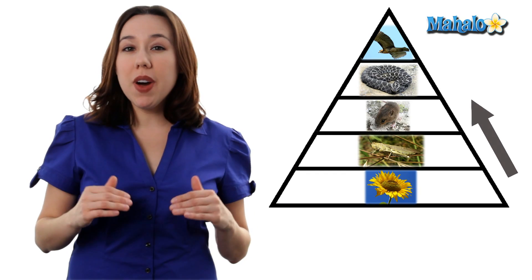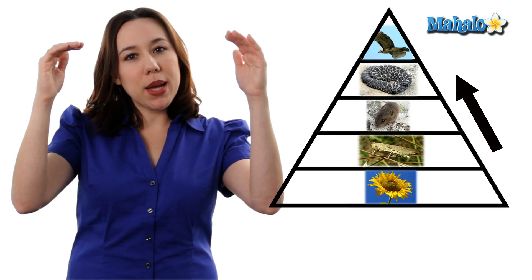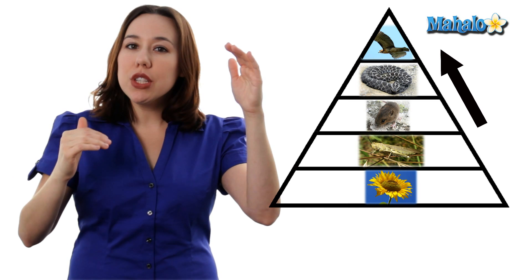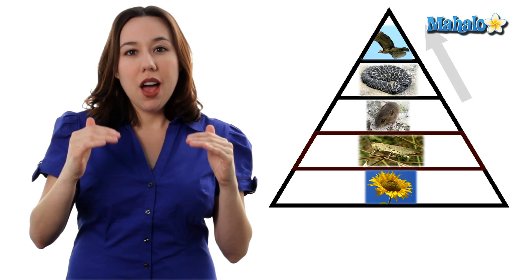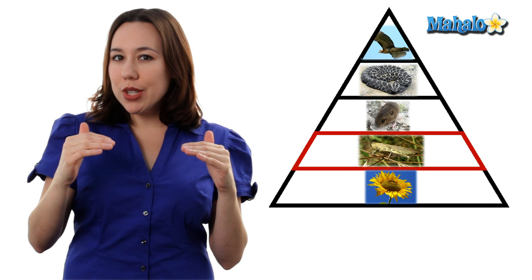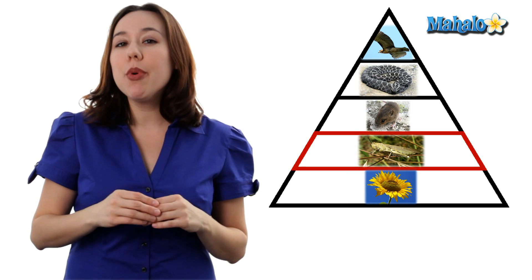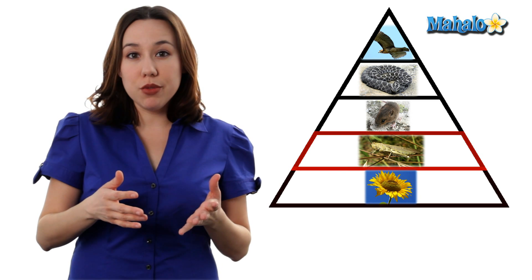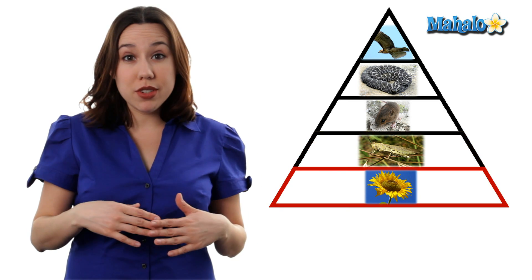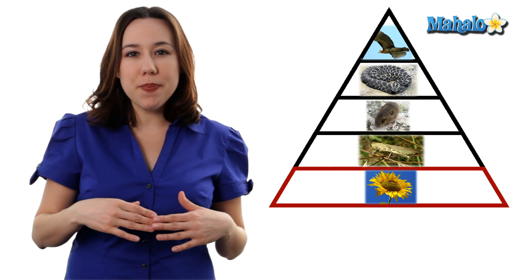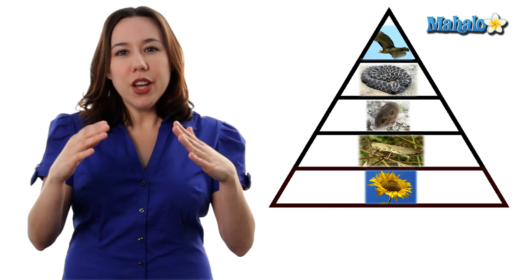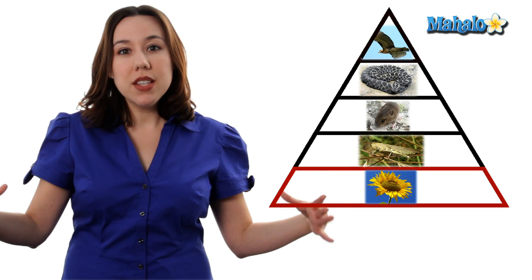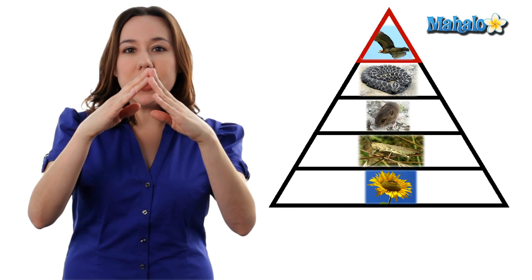As you move up the food chain towards that apex predator, you're seeing lots of different consumers past those producers. Our first level consumer is our primary consumers. These consumers are going to consume the producers at the very bottom. Think of it kind of like a pyramid, going from the very large at the bottom to the very pinnacle at the top.